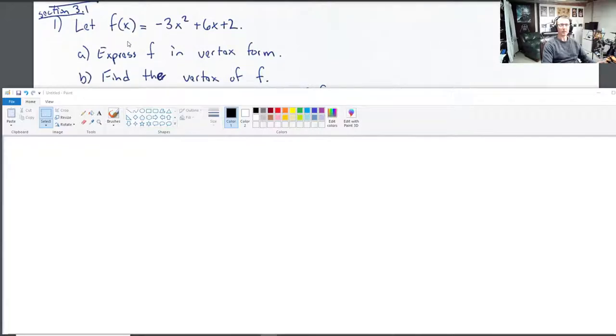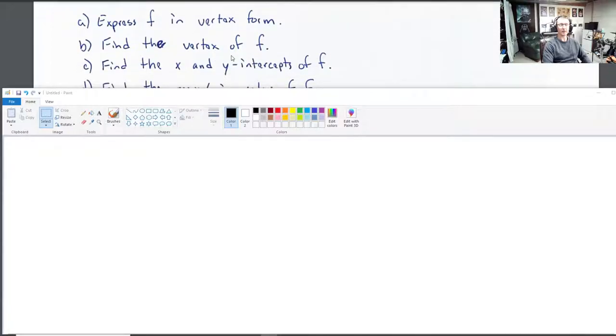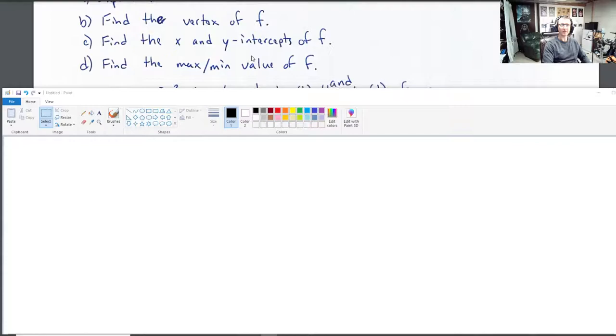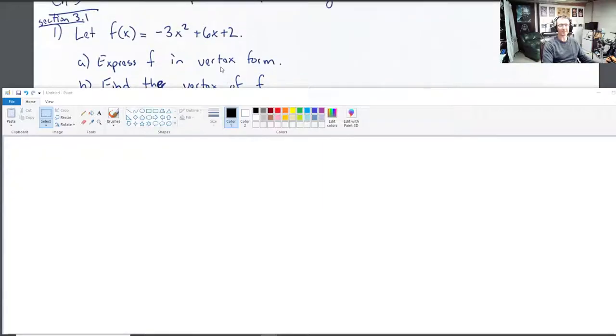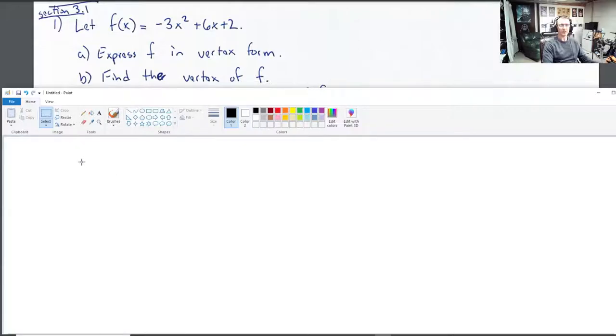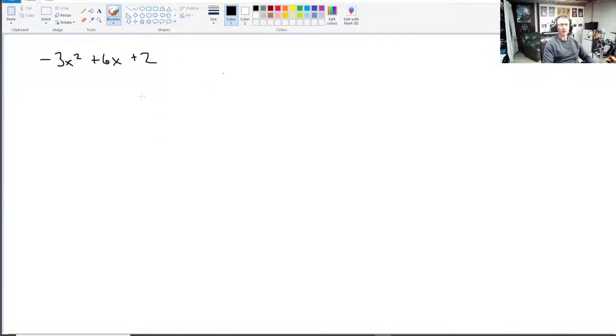This is the question I'll be going over. Let f(x) equal negative 3x squared plus 6x plus 2. We're going to express f in vertex form, find the vertex of f, find the x and y intercepts of f, and then find the max min value of f. Here's our function: negative 3x squared plus 6x plus 2.